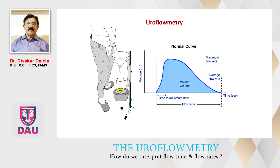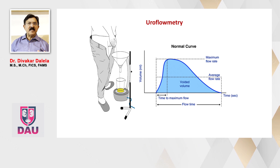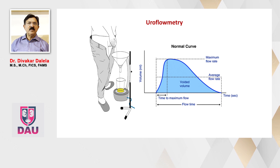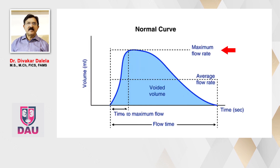In this inverted-U kind of area, which is called a uroflowmetry report, we see various findings. This graph is plotted on two axes: the x-axis shows time in seconds, and the y-axis shows volume in ml. You will see written here: maximum flow rate and average flow rate — these are the terms we use to convey the meaning.